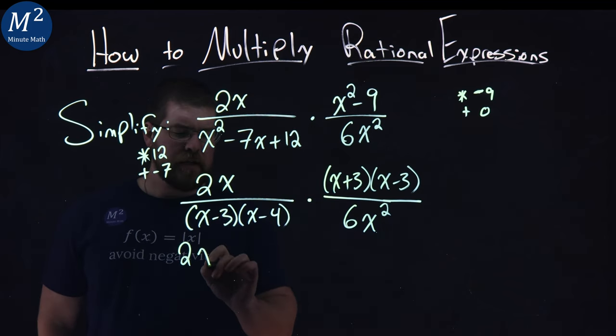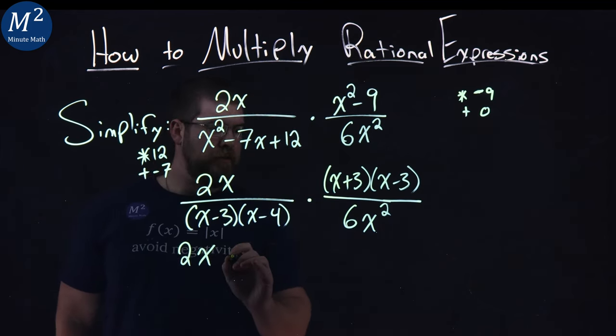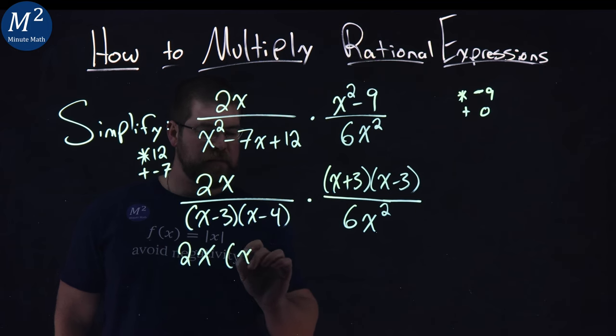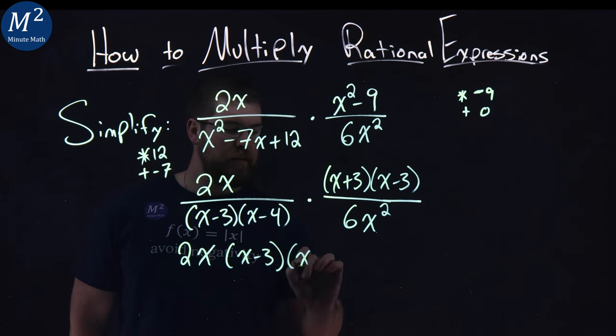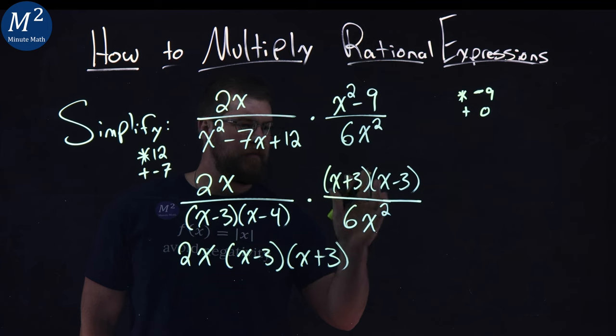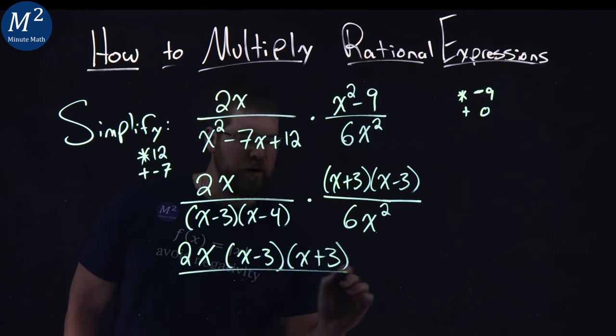2x, keep first, 2x here, times, we have a, I'm going to put an x minus 3 next, and then an x plus 3 afterwards. Kind of flip them around on the numerator here.